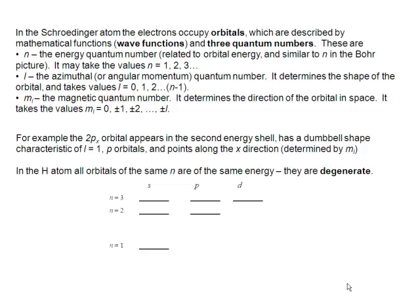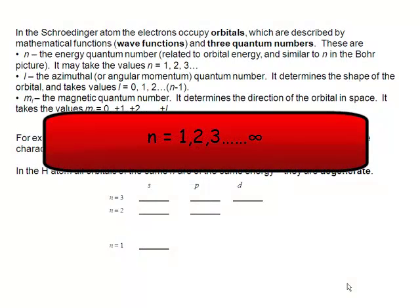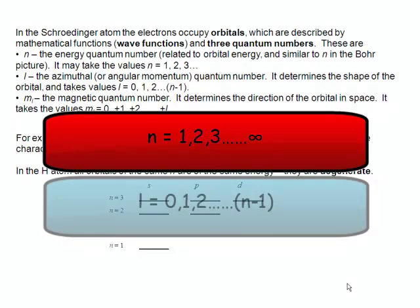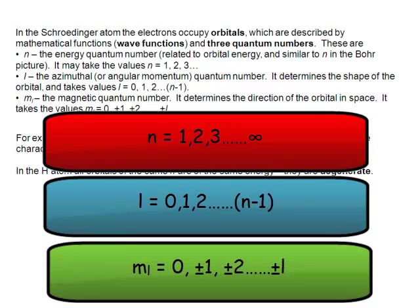So these quantum numbers can only take a few specific values. n can take any value from 1 up to infinity, in principle. For every value of n, l can take the value 0, or 1, or 2, up to n minus 1, but not beyond that. And then for every value of l, ml can take the value 0, plus or minus 1, plus or minus 2, up to ml is plus or minus l.